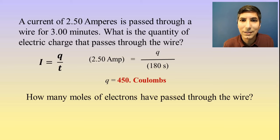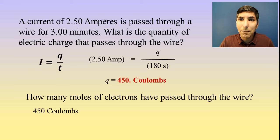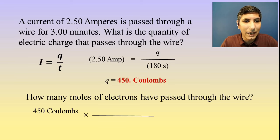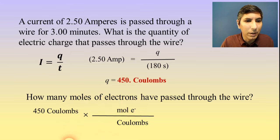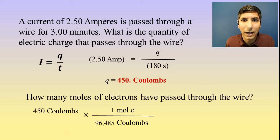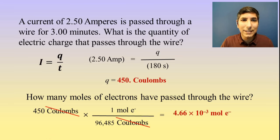Let's determine how many moles of electrons have passed through the wire. We're going to take 450 Coulombs and convert that to moles of electrons using the Faraday constant, which says there are 96,485 Coulombs in one mole of electrons. We put Coulombs on the bottom to cancel out and moles of electrons on top. Dividing 450 by 96,485 gives us 4.66 × 10⁻³ moles of electrons passing through the wire.